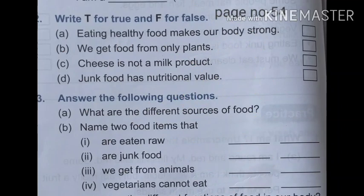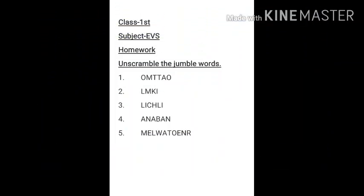That's all for today. Now it's time for your homework. You have to do the true-false and question number B in your homework copy. आपको true-false और question number B — 'Name two food items' — ये दोनों अपनी homework copy में write करने हैं. इसके अलावा मैंने आपको five jumble words दिये हैं, इसे भी solve करके homework copy में write करना है. Okay, that's all, thank you.